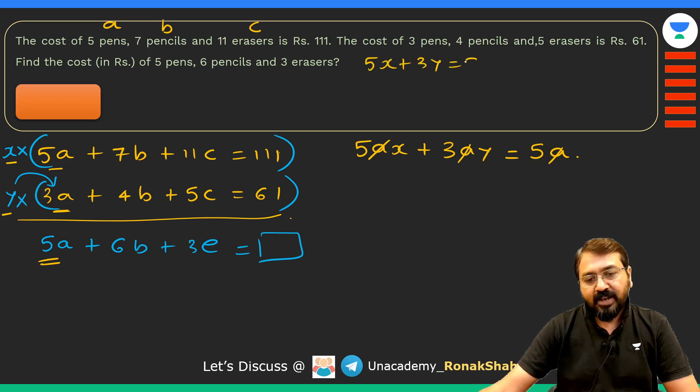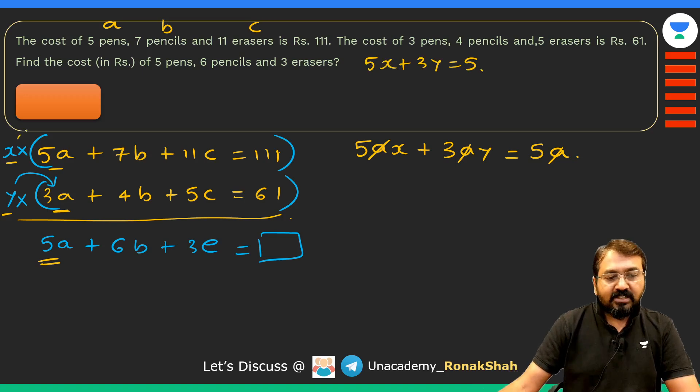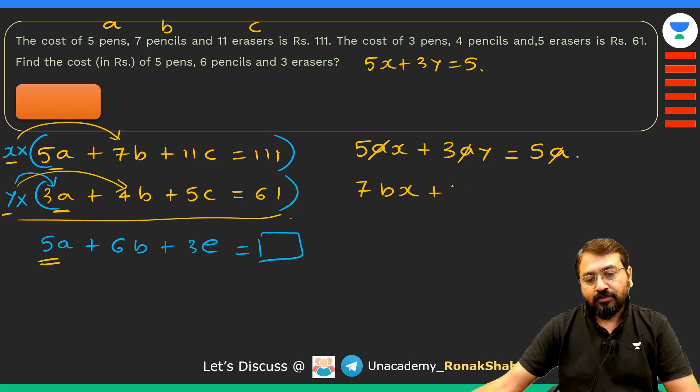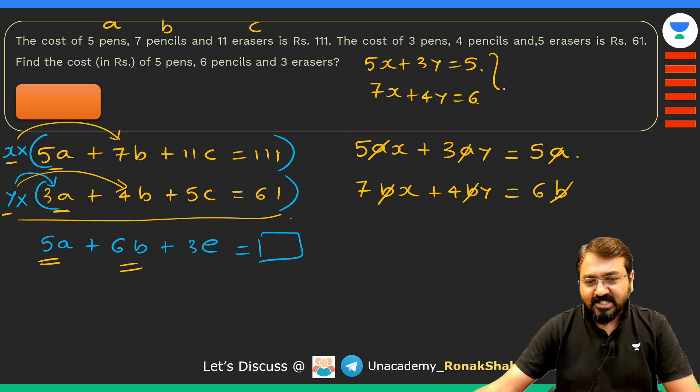Similarly, when this x is multiplied with 7, we'll get 7bx, plus this y is multiplied with 4b, so we'll get 4by. The result should be equal to 6b. Again, b will get cancelled off and you will get another equation which is 7x + 4y = 6.